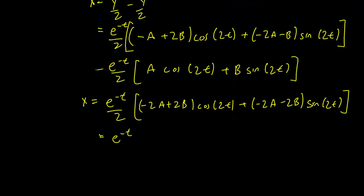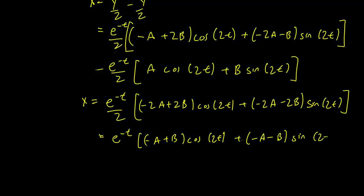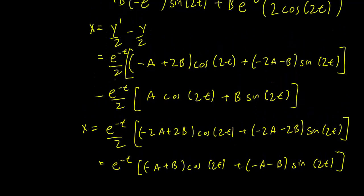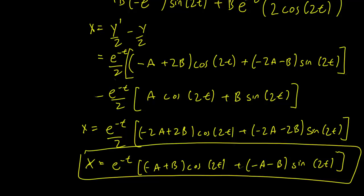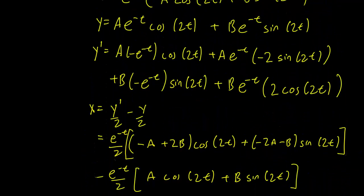This simplifies to x equals e^{-t} times negative a plus b cosine 2t plus negative a minus b sine 2t, after eliminating the one half factor. So there we have our general solution for x, and we have a general solution for y.